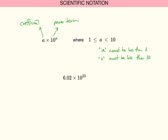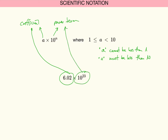An example would be 6.02 times 10 to the 23rd, which we will use quite a bit in the future. In this case, 6.02 is the coefficient and 10 to the 23rd is the power term.